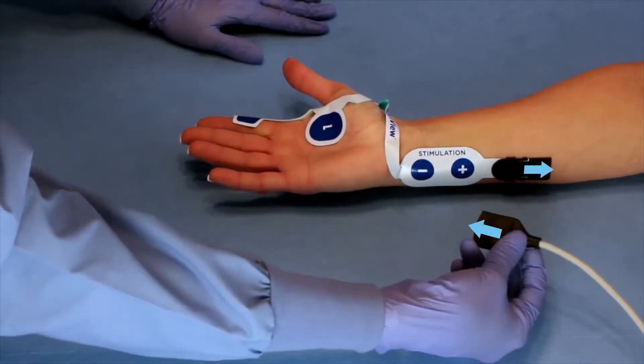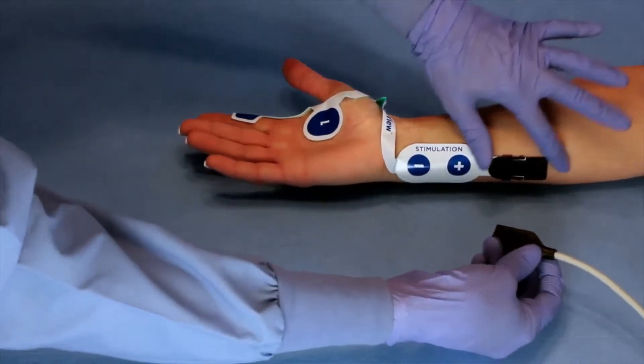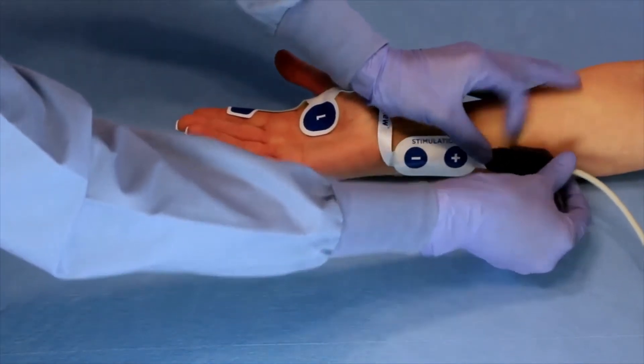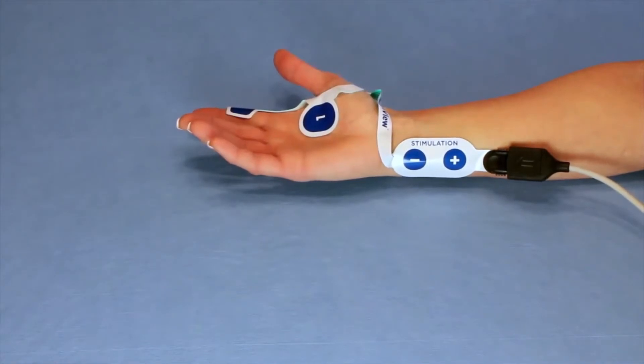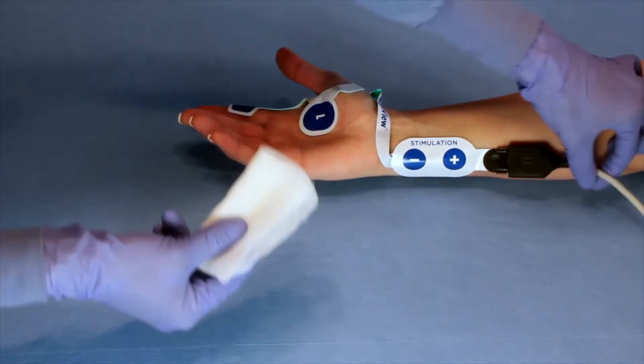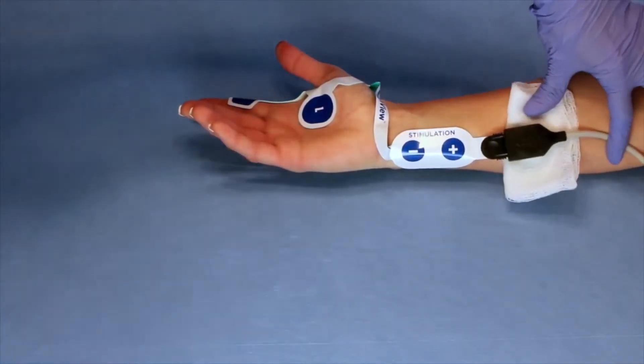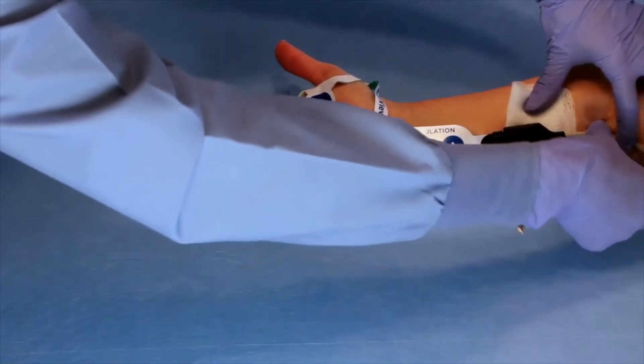Connect the electrode to the cable making sure that the arrows are pointing up and towards each other. If desired, a gauze can be placed under the cable to minimize skin compression. Tape the cable in place to prevent it from pulling on the electrode.